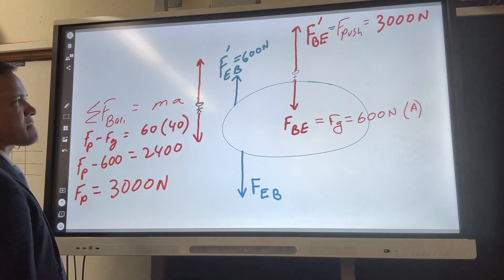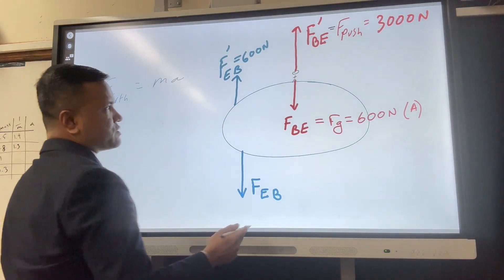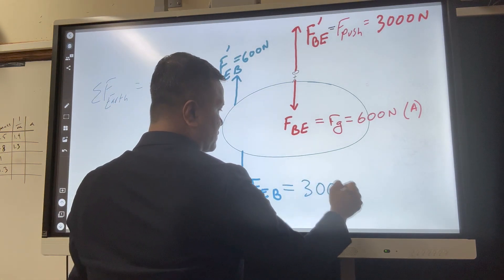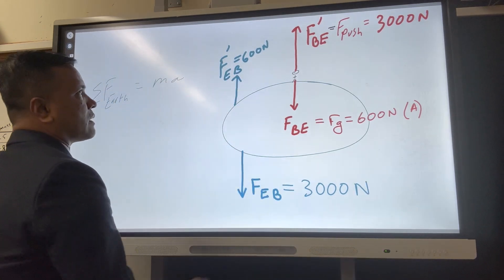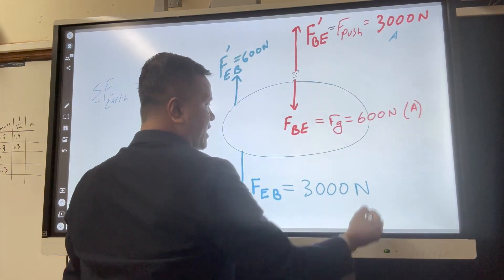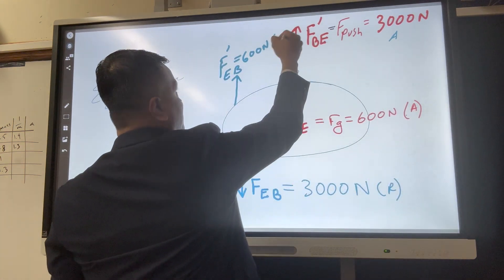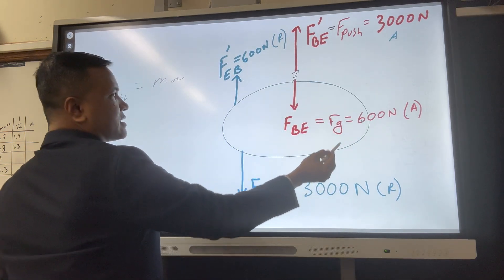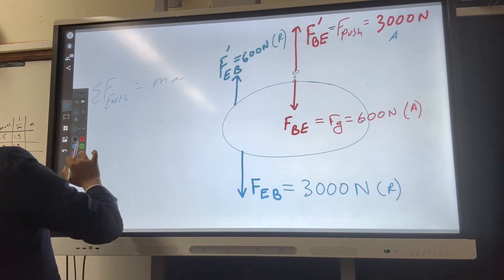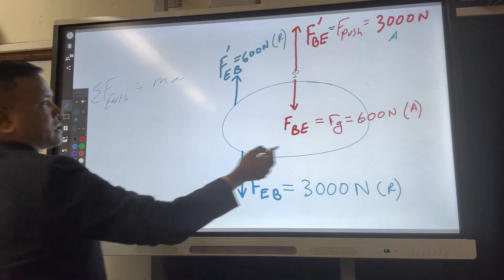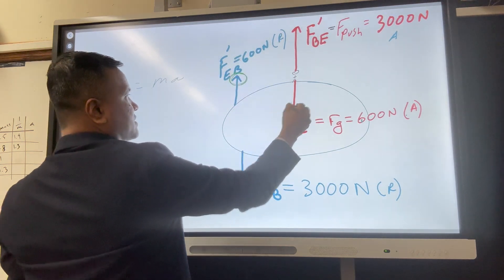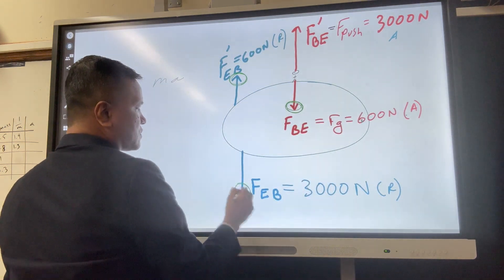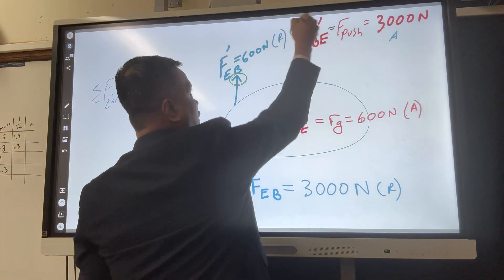Action and reaction: equal in magnitude, opposite in direction. The net force on the body is F_push minus FG: 3000 minus 600 = 2400 Newtons. The net force on Earth is negative 2400 Newtons — equal in magnitude, opposite in direction.